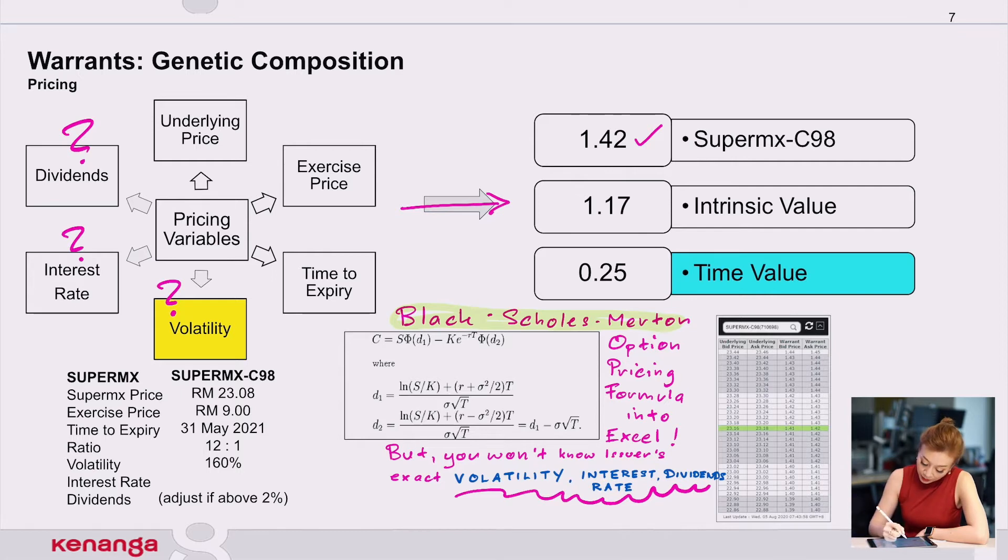Easy. 23, which is the price, minus the exercise price, divided by 12, which is the ratio. And that is going to be 117. That's the intrinsic value.